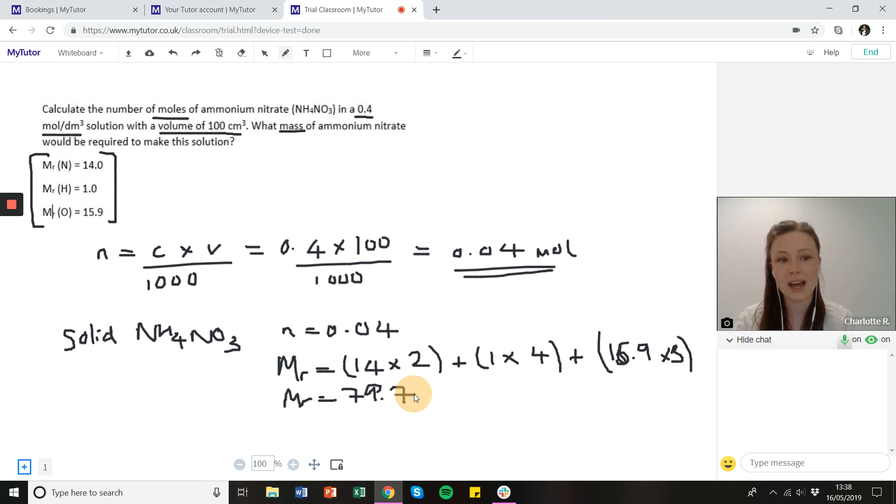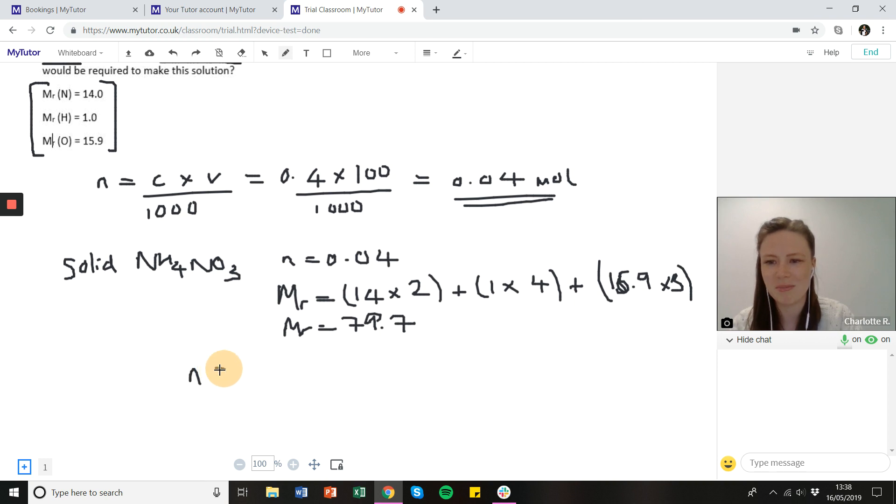So we have a number of moles and we have a formula mass and I'm sure you're all aware of this equation which is the number of moles equals the mass divided by the formula mass. And we want the mass at the end of the day, that's what the question is asking us about. So if we rearrange that we get the mass equals the number of moles times by the formula mass and then we just pop the numbers in that we've already got. So 0.04 multiplied by 79.7, and that gives us a mass of 3.188.